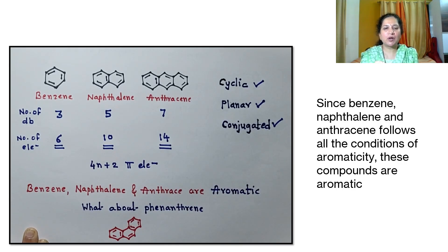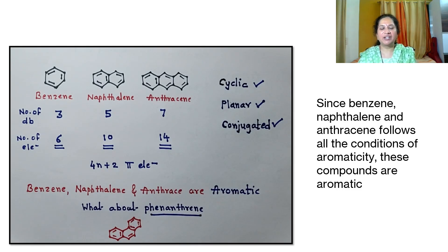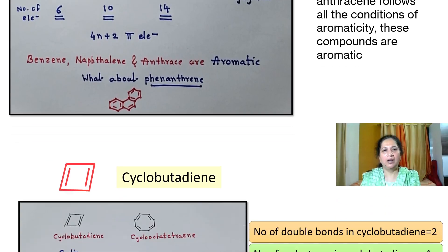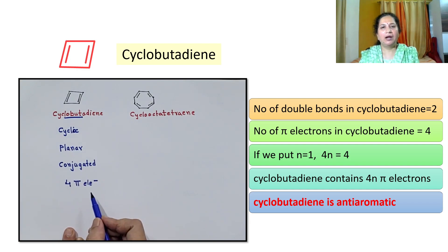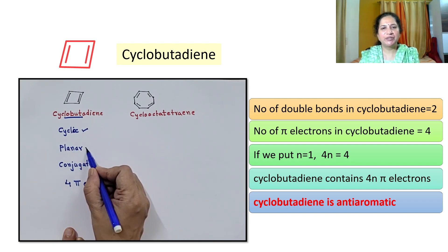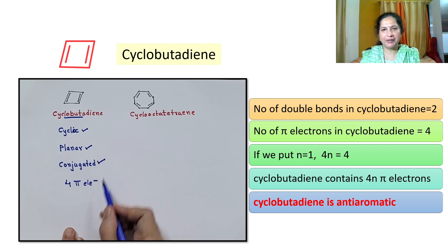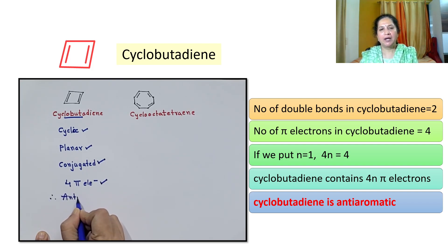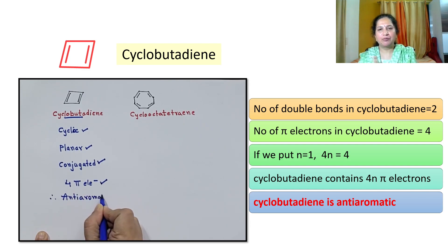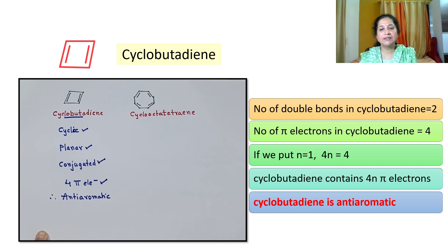Now you solve for phenanthrene — I have shown you the structure. Check whether phenanthrene is aromatic, anti-aromatic or non-aromatic. Next, let's take the example of cyclobutadiene. As shown in the structure, cyclobutadiene is cyclic, planar and conjugated. It contains two double bonds, meaning four pi electrons. Four is a number that comes in the 4n series, so we can say that cyclobutadiene is anti-aromatic.